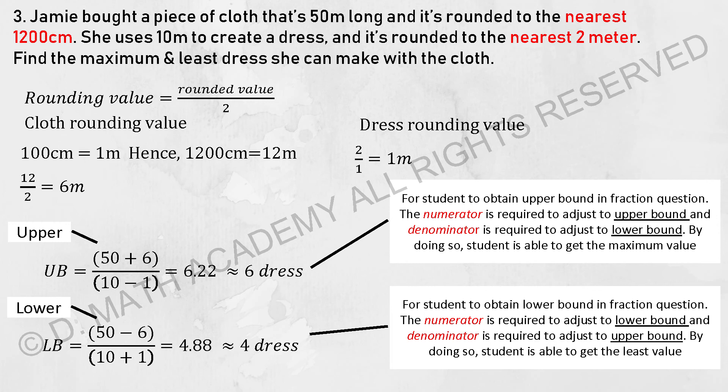And for us to identify the lower bound, we took 50 minus 6, and the denominator needs to be bigger. So I took 10 plus 1, so it will be 4 dresses. The upper bound or the maximum dresses she can make with the cloth is 6 and the least she can make with it is 4.